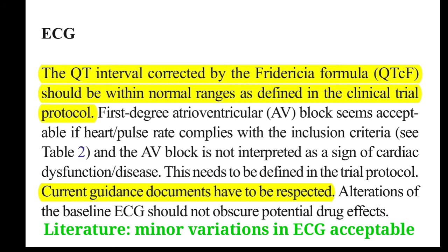Similar findings are true for ECG. In one study where placebo was given, conduction abnormality was found in around 6% of subjects, while rhythm abnormality was present in 30% of subjects. In another study, 43% of subjects had a normal basal ECG, but when exposed to placebo, these subjects developed ECG abnormalities. Conversely, 45% of subjects whose basal ECG was abnormal saw their ECG normalize over time. This means that minor ECG abnormalities occur frequently in healthy subjects.